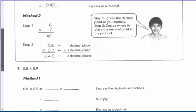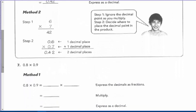Method two: multiply as if they are whole numbers — ignore the decimal points. Six times seven, whole numbers, no decimal points. Then put the decimal points back in, counting them up and moving from left to right to place the decimal in the answer.